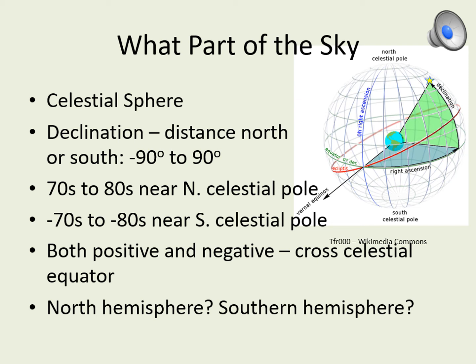When you answer this question, make sure you say what declination values you're using. You don't have to list every star's declination — it's okay to say the stars in your constellation have declinations between these two values. Also, you only need to look at the declination degrees, not the minutes.